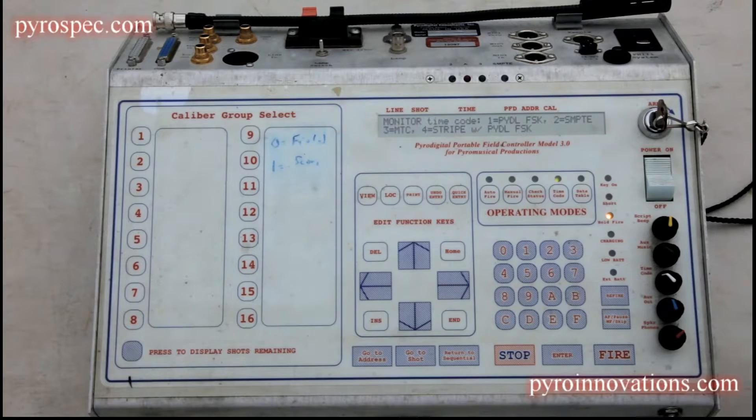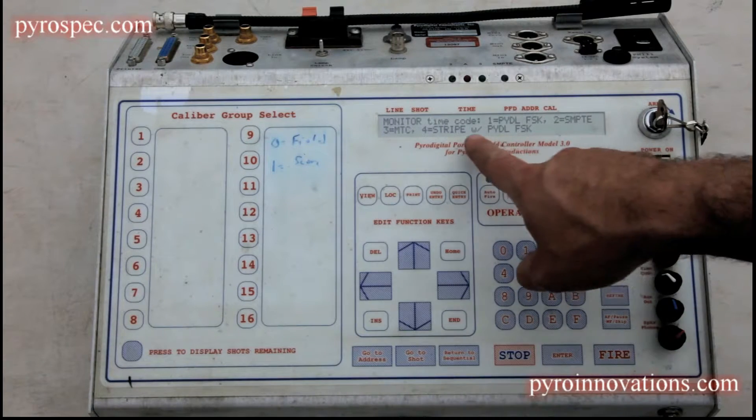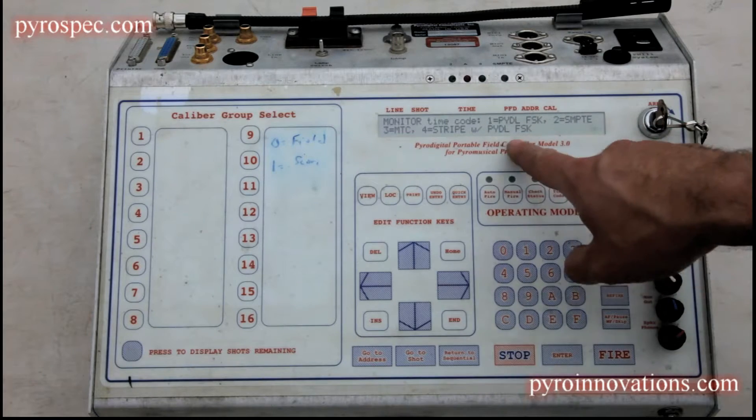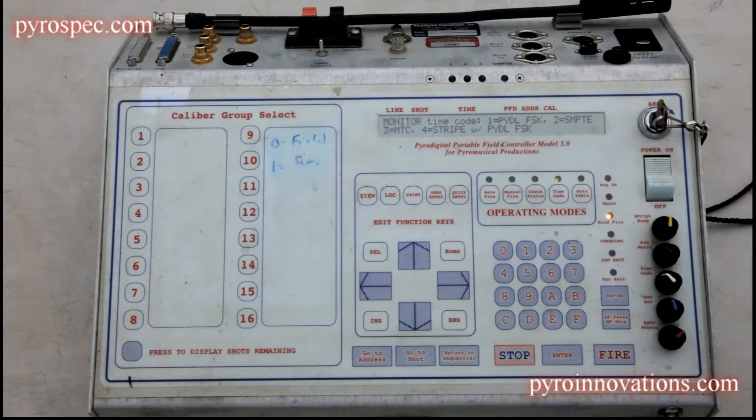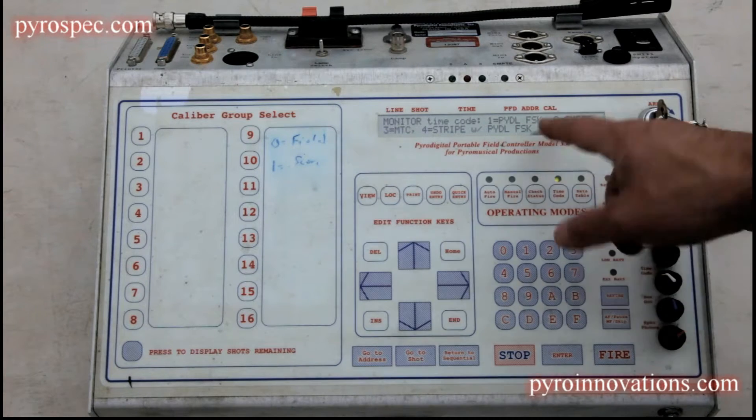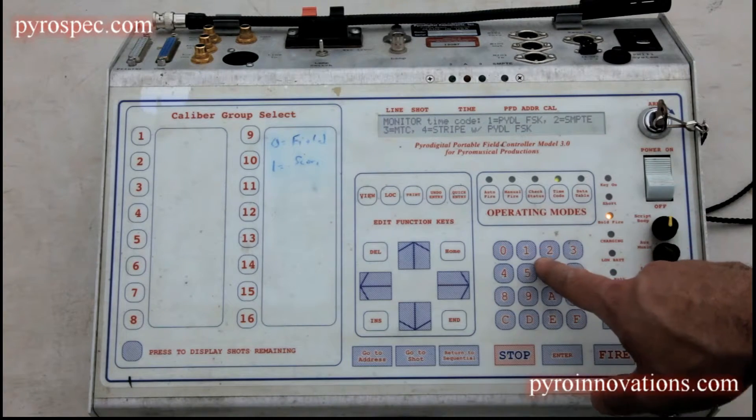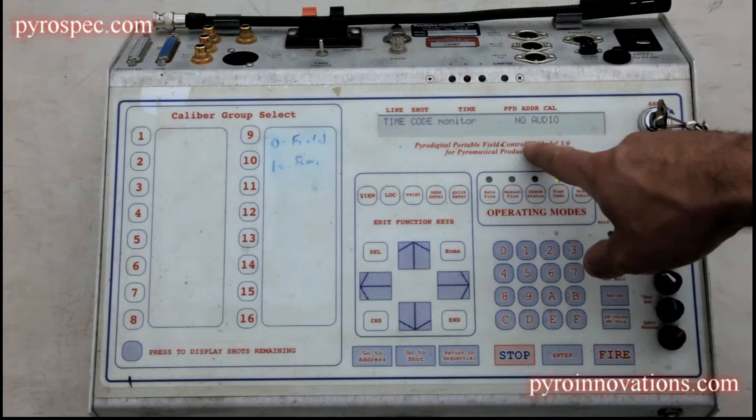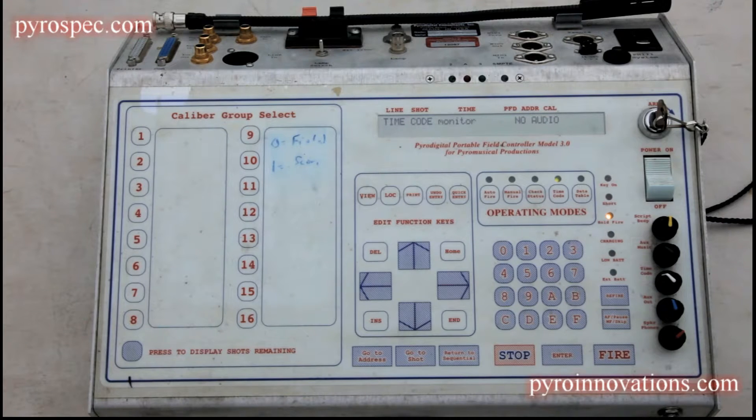It's asking you what type of timecode. Since pyrodigital FSK is almost exclusively what we use, it's the only one I'm going to talk about here, but you do have other choices such as SMPTE. Pyrodigital FSK is choice one, so we're going to hit that. Right now it says 'no audio' because we're not actually receiving any timecode, and it's going to tell you that until the timecode begins to feed.